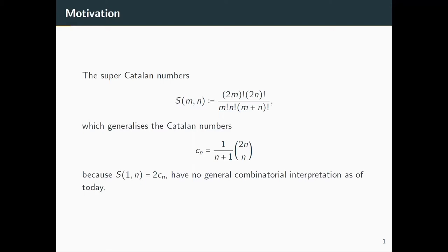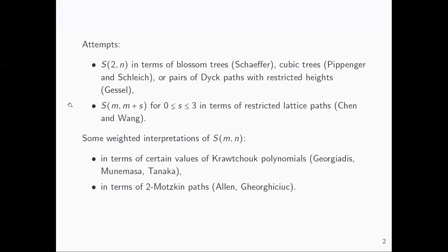Although there are many combinatorial descriptions of the Catalan numbers, to the best of my understanding there is no general combinatorial interpretation of the super-Catalan numbers. However, there are several attempts made by some mathematicians to describe the super-Catalan numbers for some values of m and n. For example, if m equals 2, we have a description in terms of blossom trees by Schaeffer, cubic trees by Bipengar and Schaeffer, or pairs of Dyck paths with restricted heights by Kessel. Or if n equals m plus s for some s, we have a description in terms of restricted lattice paths by Chen and Wen.